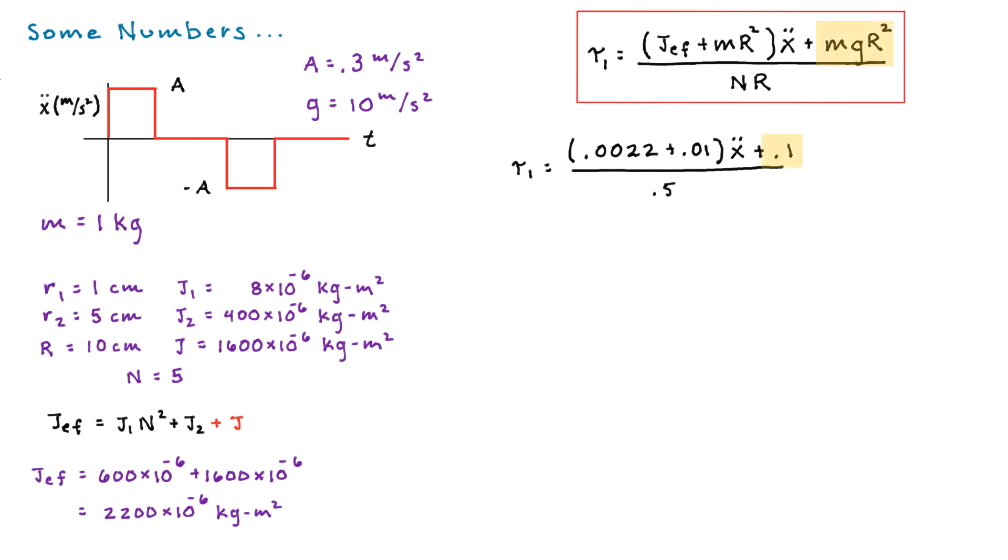And divide the whole thing by 0.5. Now what's interesting here is that if x double dot is relatively small, which it is in our case 0.3 meters per second squared, then that term is really quite tiny compared to the 0.1. Put another way, it means that the gravitational term is really going to dominate our tau 1 calculation. And so we should expect to see a significant tau 1 associated with gravity, and then just a wee little bit plus or minus on that due to the pulse action.